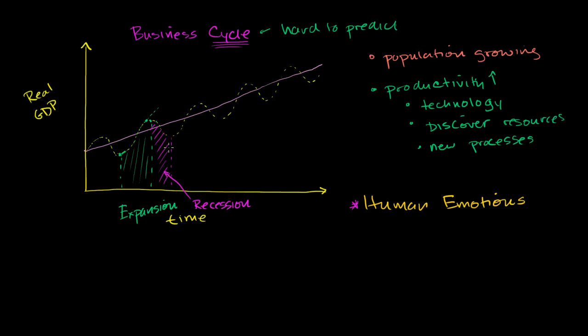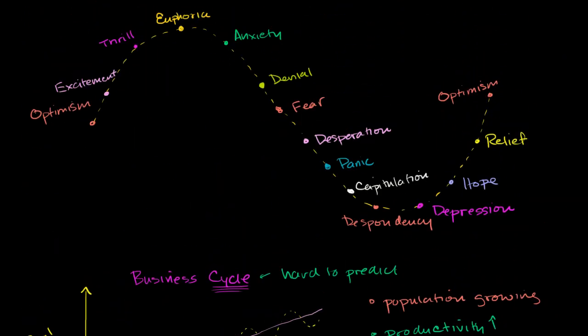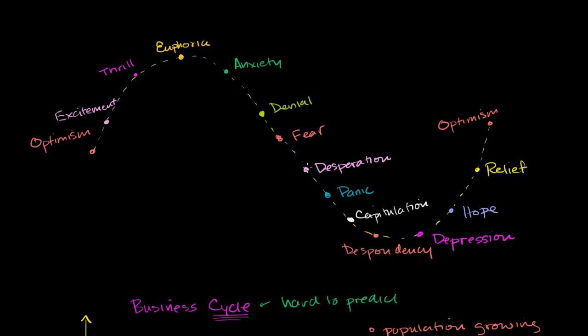And to kind of understand this emotional aspect of it, this is something I redrew, a graph that always gets sent around during every bubble when people start becoming skeptical of the growth in economy. And it traditionally refers to stock market cycles, but stock market cycles are closely linked to actual economic cycles. And I think these words really do capture the emotional sentiment of what's going on during the business cycle or during a stock market cycle.